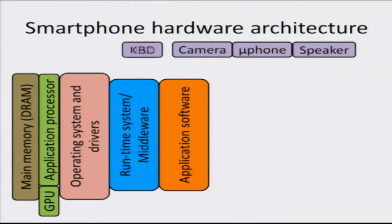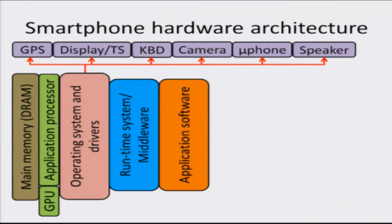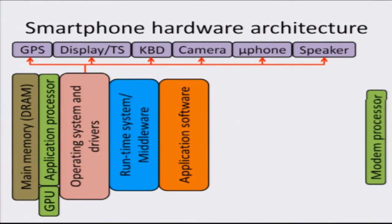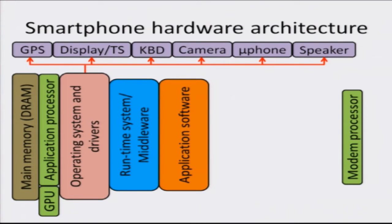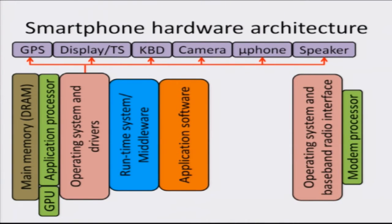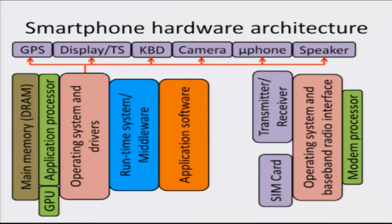The operating system must have drivers for various types of peripheral or IO devices, for example the global positioning system, display, touch screen, keyboard, camera, microphone, speaker, and so on. Communication is handled by a modem processor which receives all the signals and passes them on to the operating system and the baseband radio interface. The radio interface communicates with the transmitter and receiver and also the SIM card. The two different operating systems residing on the application processor and the modem processor communicate with each other for handling data communication. For example, when the modem processor receives some data it will interrupt the application processor through its operating system, and the application processor will handle the data copy to its memory, decode it, and take appropriate actions.